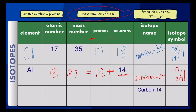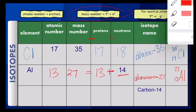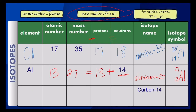Finally, we have carbon-14. The symbol for carbon is capital C and its atomic number is 6, so its proton number is also 6. In the name we're given the mass number, which is 14. To find the neutrons, subtract: 14 minus 6 gives you 8 neutrons. When we write the symbol, it's carbon with a 14 representing the mass number at the top and a 6 representing the atomic number at the bottom.